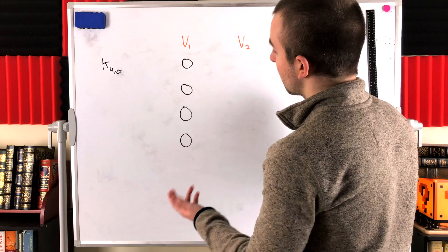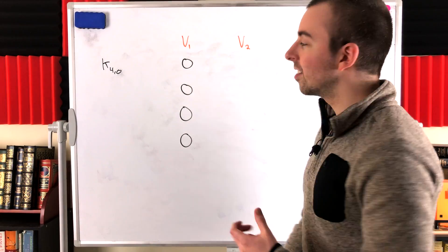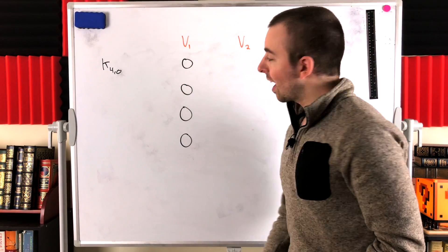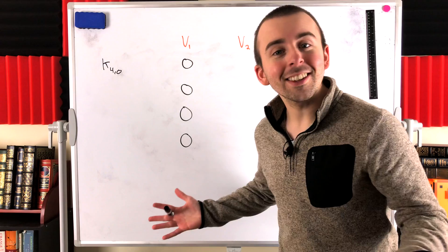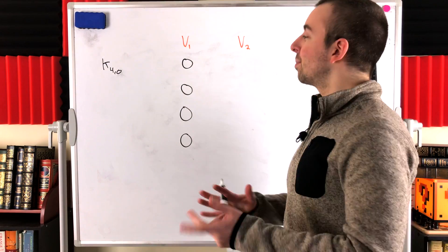if they're in different partite sets. There are no vertices in different partite sets. So this graph doesn't have to have any edges and it doesn't. So it fits the bill. It's a complete bipartite graph.